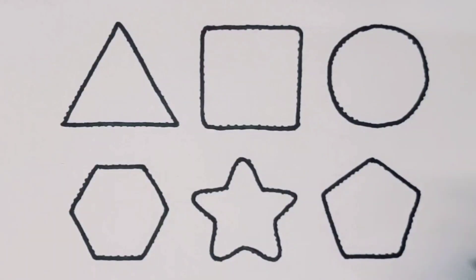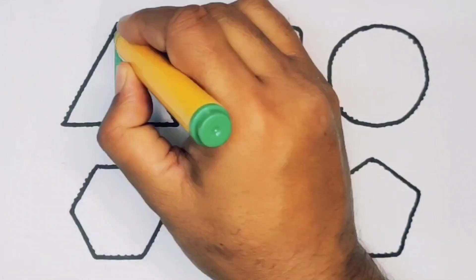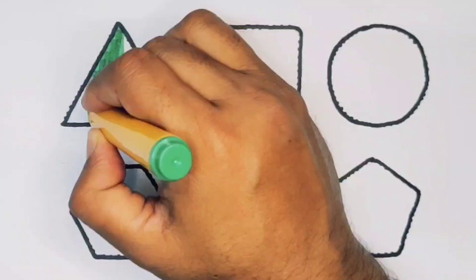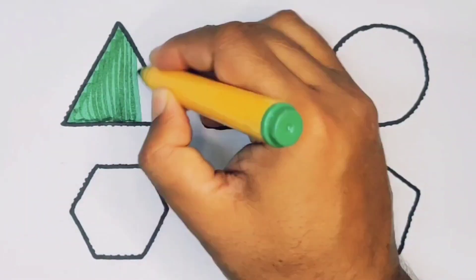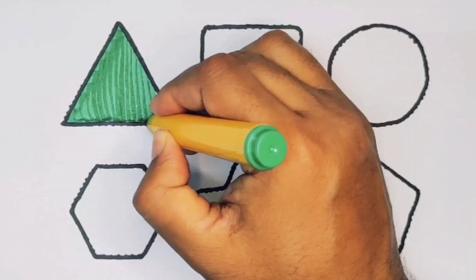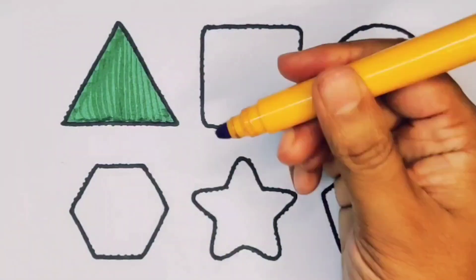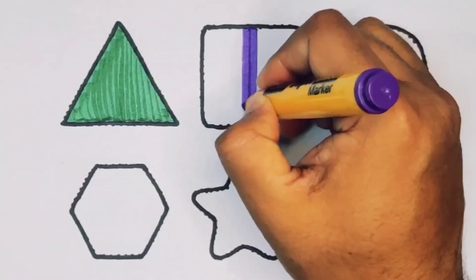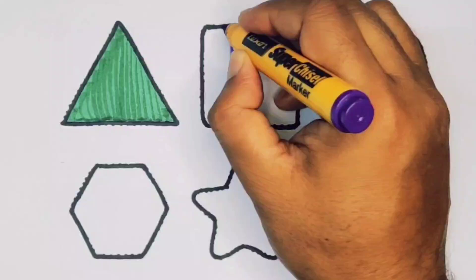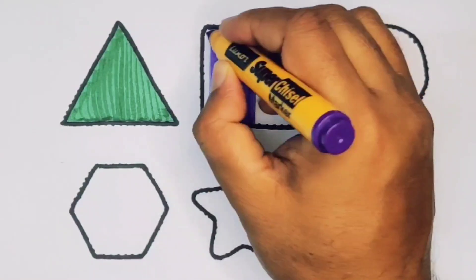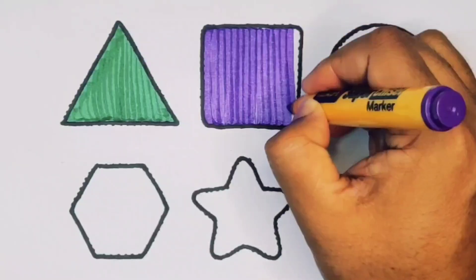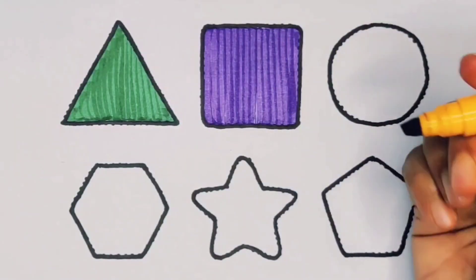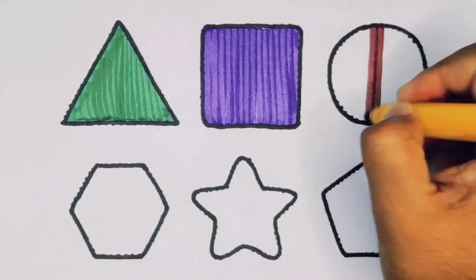Now we're going to put the colors. Green color for the triangle. Purple color for the square. Chocolate color for the circle.